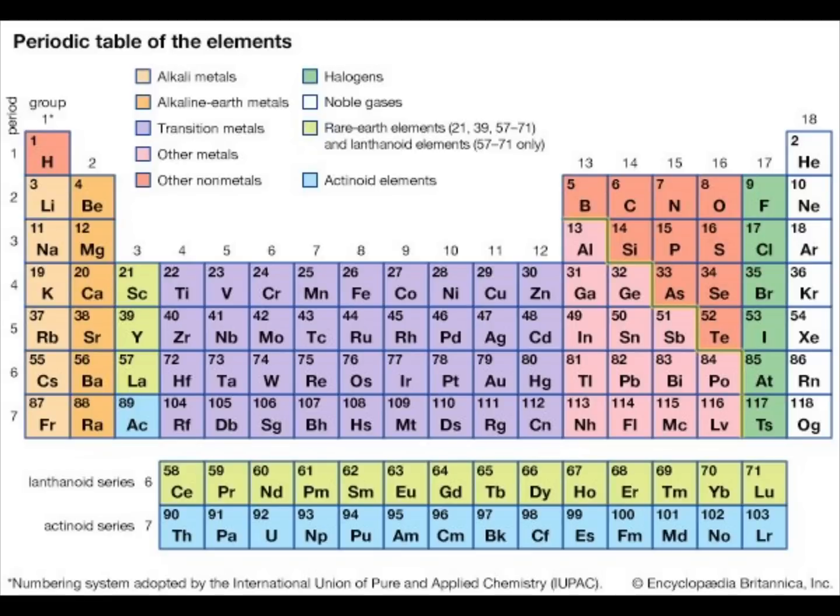Groups 4 through 12 are known as the transition metals. They look like metals, they're malleable and ductile, they conduct heat and electricity, and they form positive ions. Copper is a transitional metal. Group 18 is the noble gases, which are known to be inert, meaning that under normal conditions, they are non-reactive.